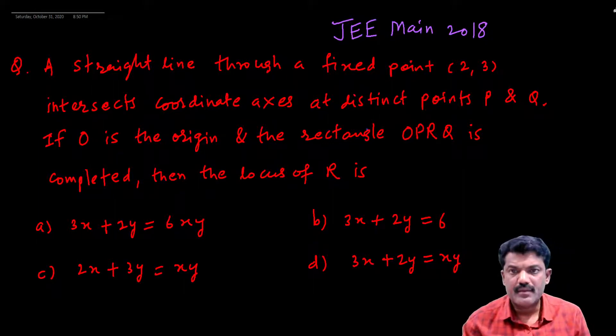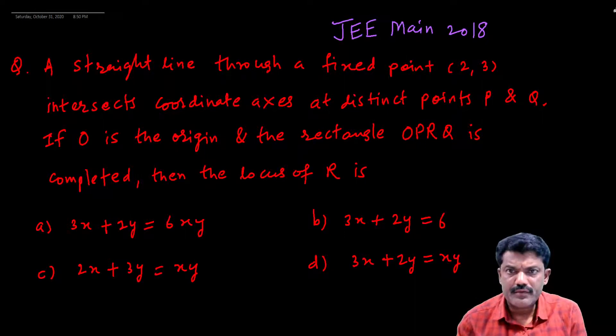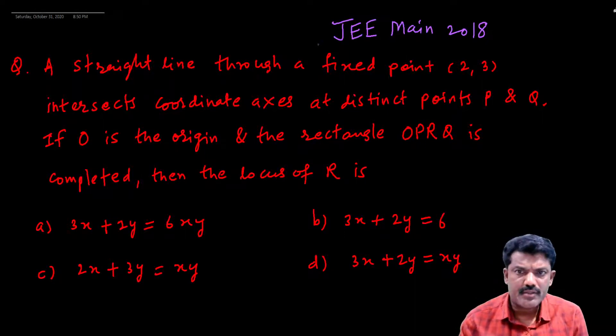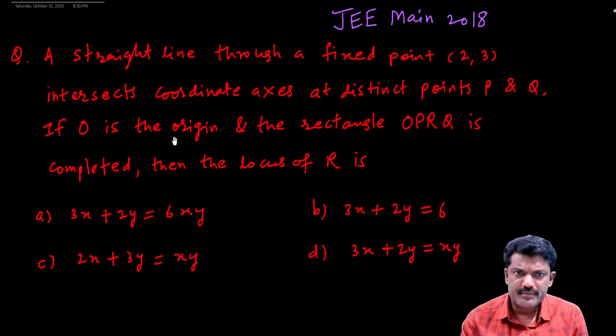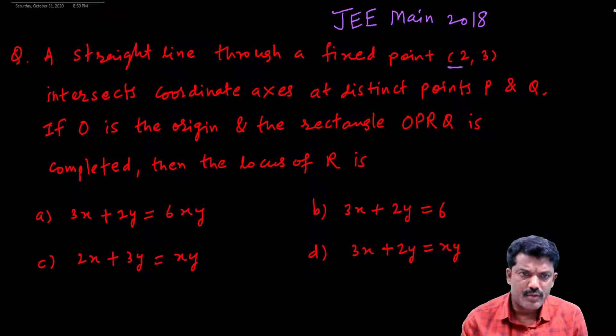Hello students, this is the question of JEE Main 2018 on the topic of straight line. In this question it is given that a straight line through a fixed point intersects coordinate axes at distinct points P and Q.